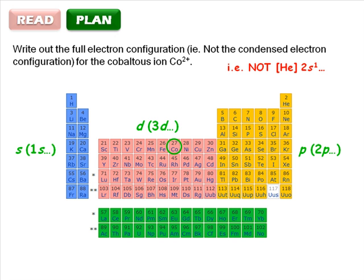And remember, the question asks for the configuration of cobalt 2+, which has two less electrons than the cobalt atom.